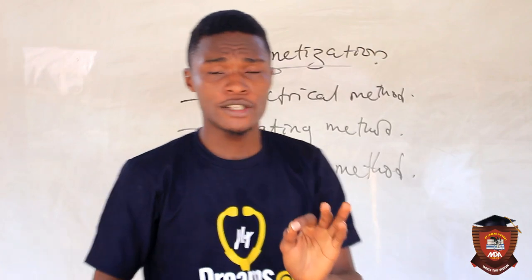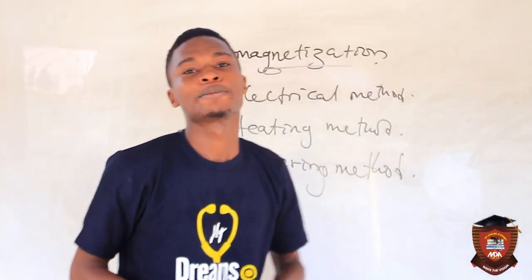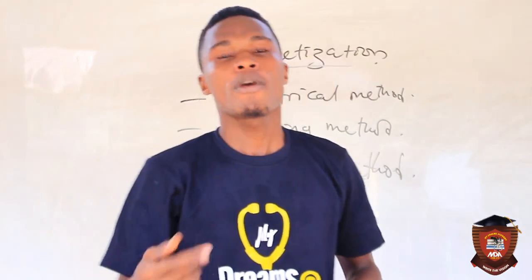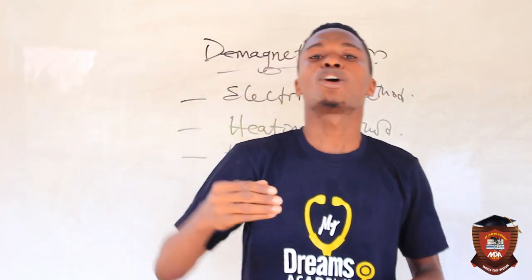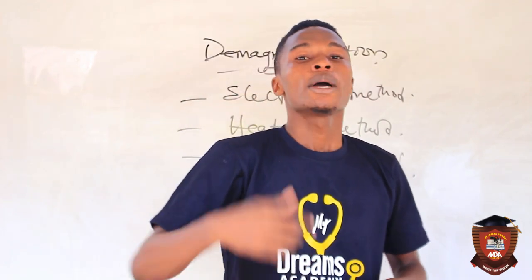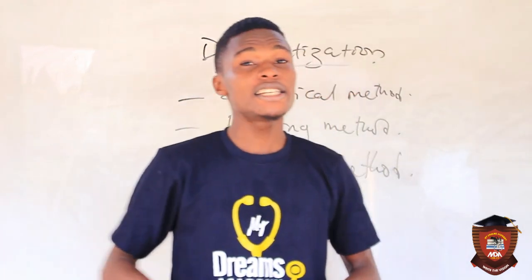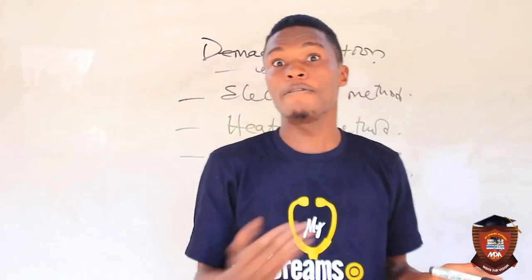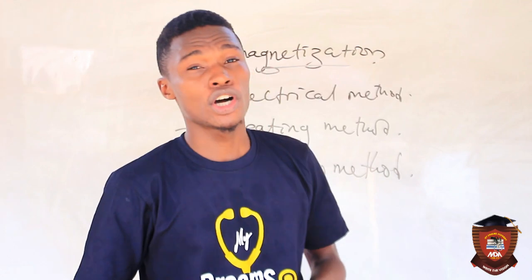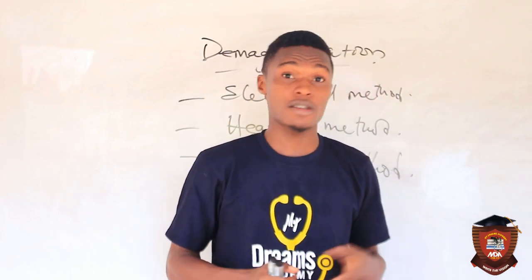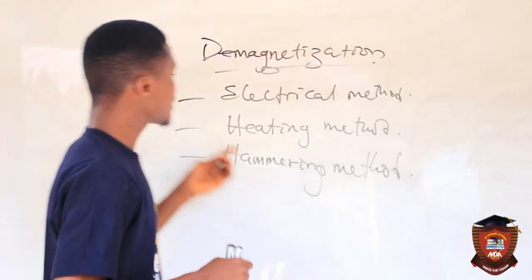In the electrical method, the solenoid is used again, but this time an alternating current (AC) is passed instead of DC. Because of the changing polarity of the alternating current, the electrons of the magnet start moving randomly, causing the material to lose its magnetism. However, this method is not fully efficient — it may remove only about 80 to 85 percent of the magnetism.